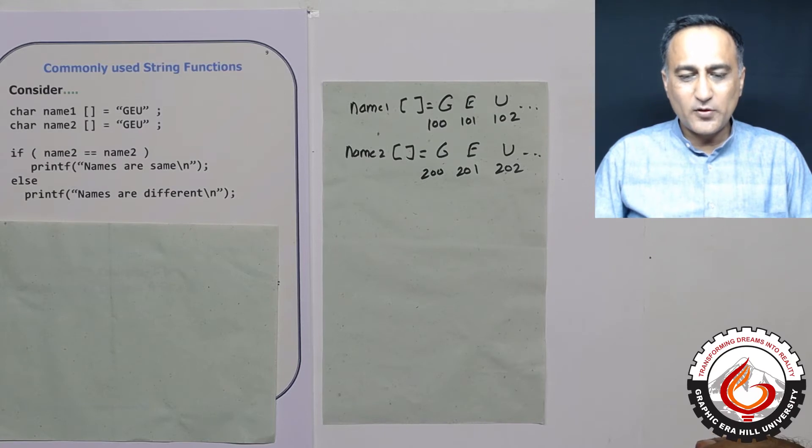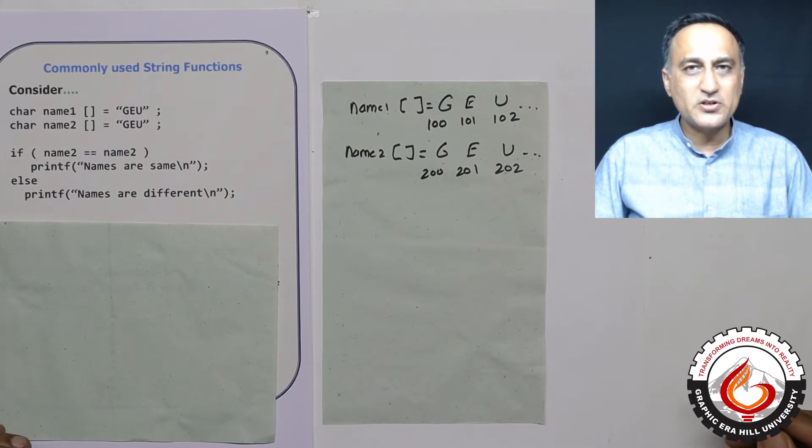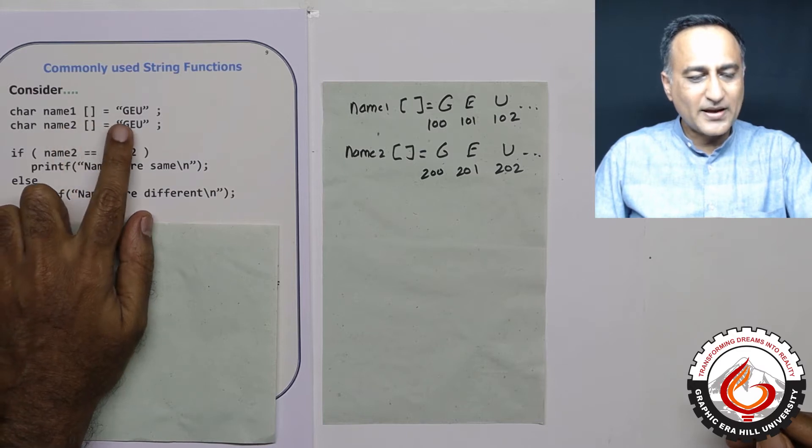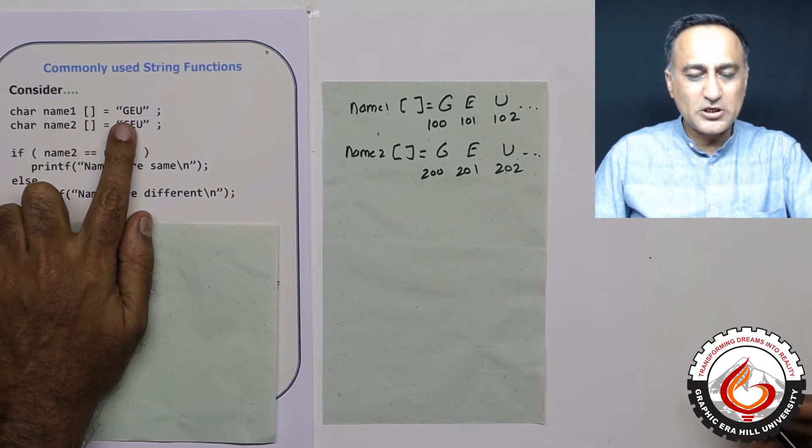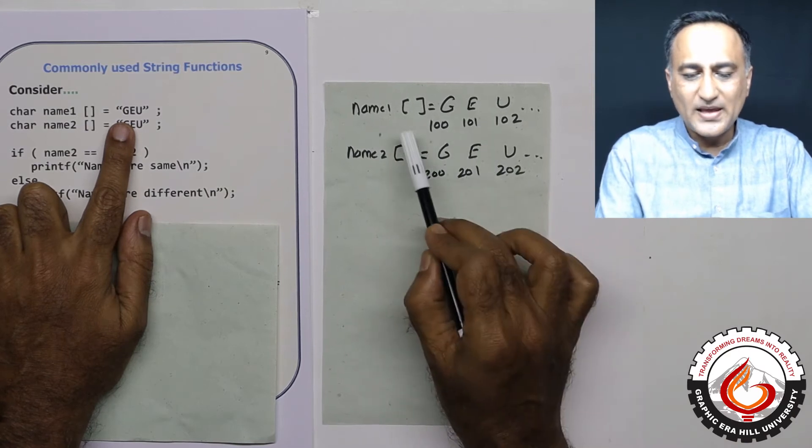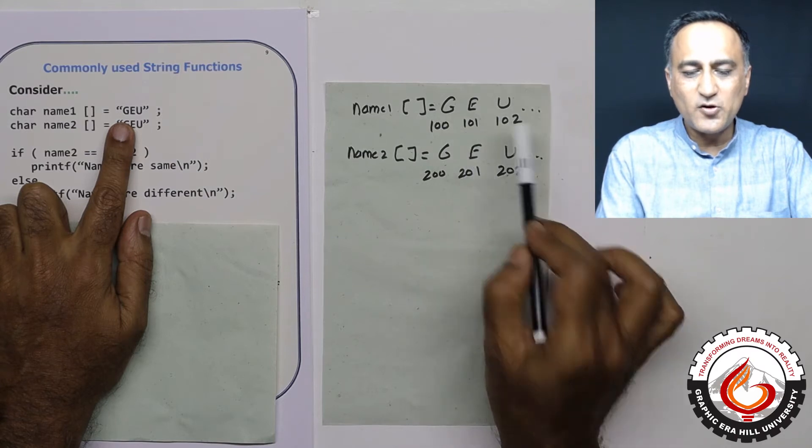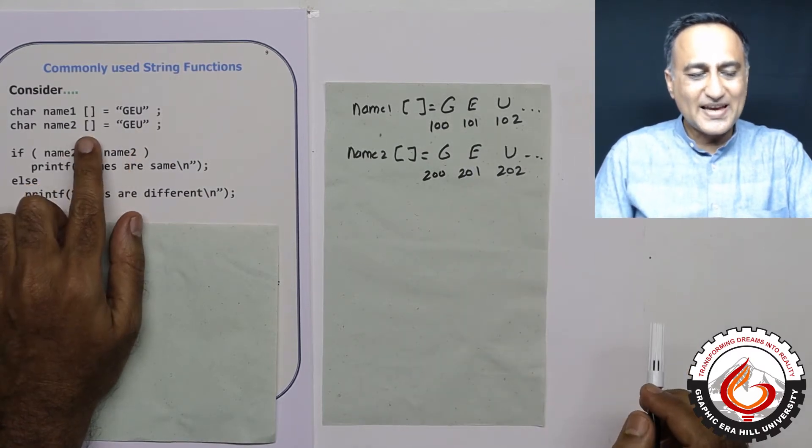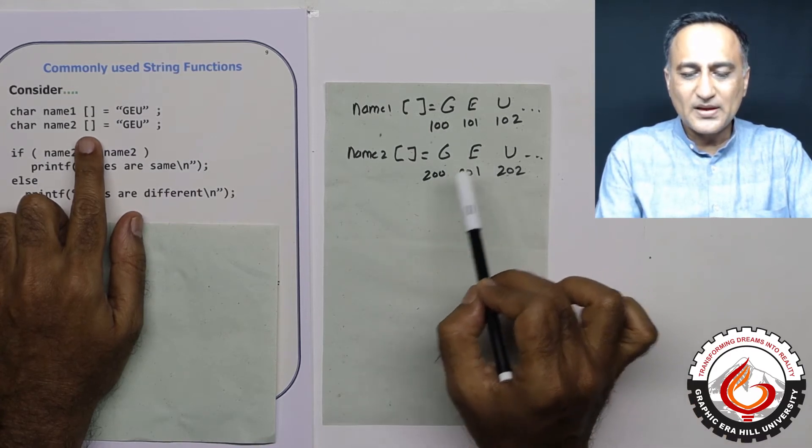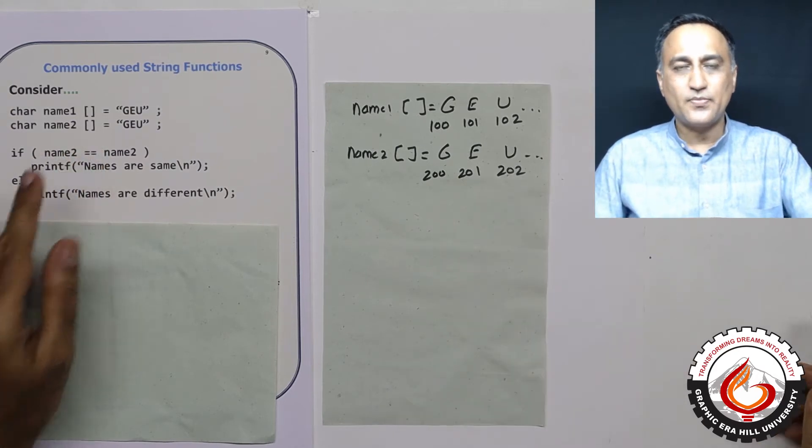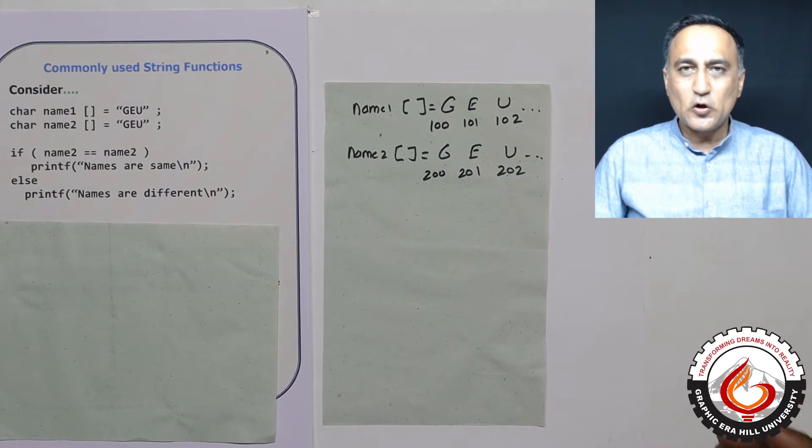Before I enter into talking about different functions, I need to explain a very common mistake which is made by students. Suppose I define name1 as an array of characters with the initial value geu. So name1 is geu. The array can start at memory location 100, e at 101 and u at 102. Name2 is another array with the same content geu starting at 200, 201 and 202. Now, if it was normal numbers, I could say is x equal to y.